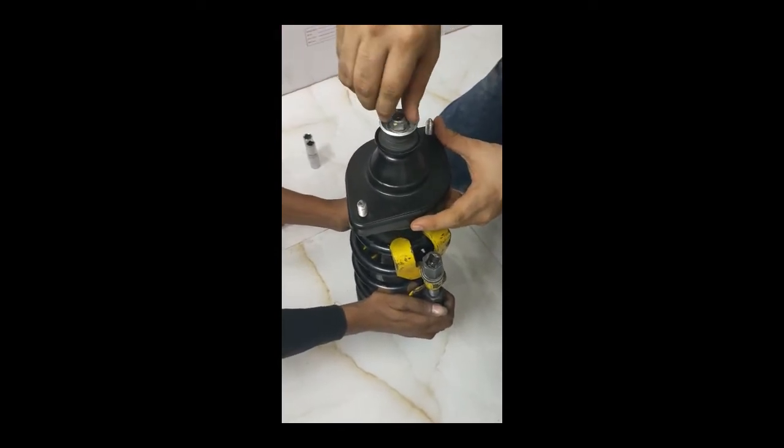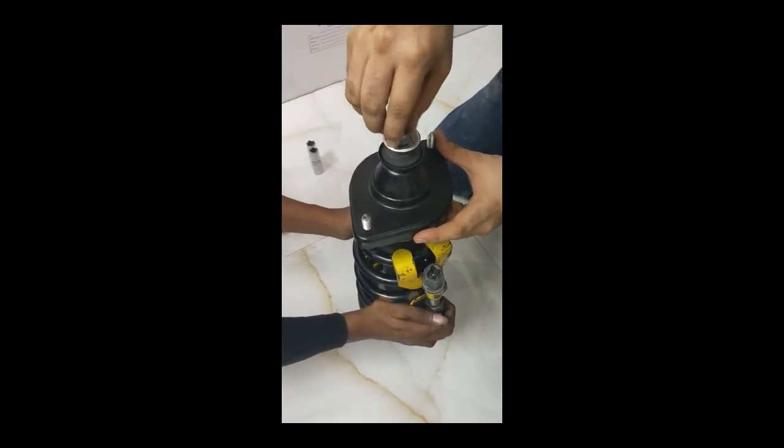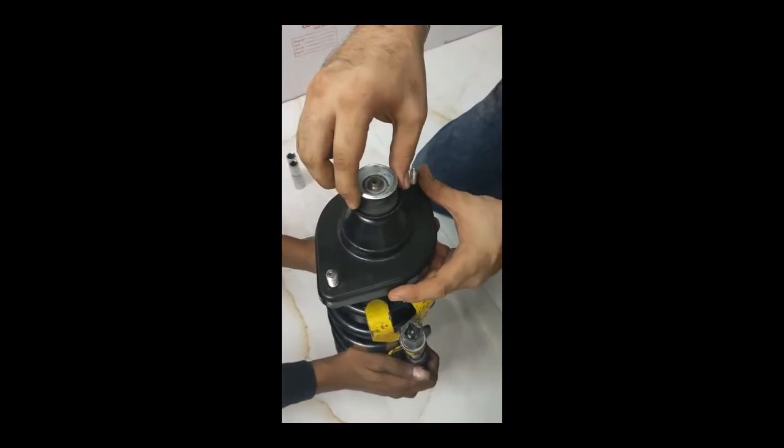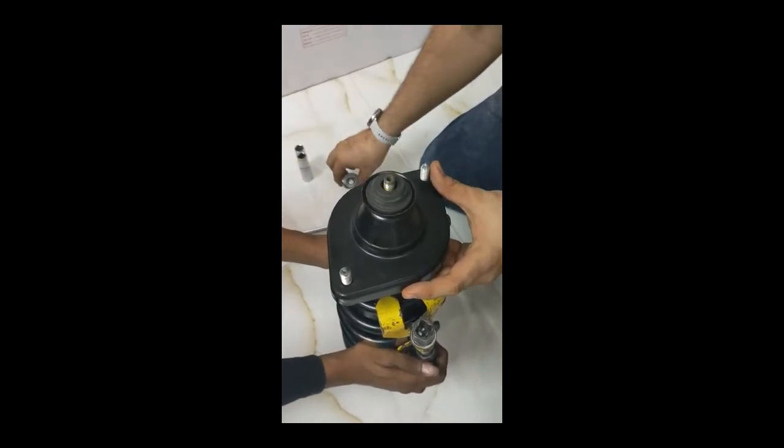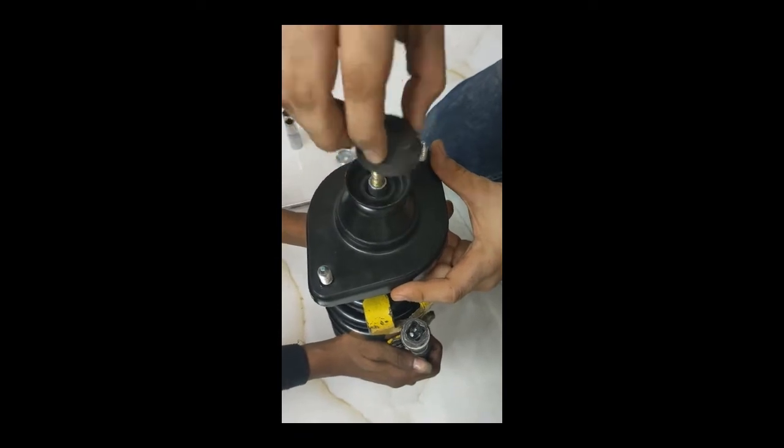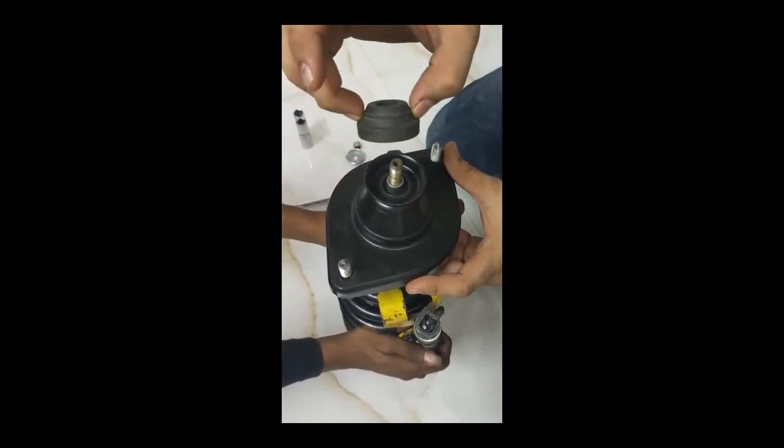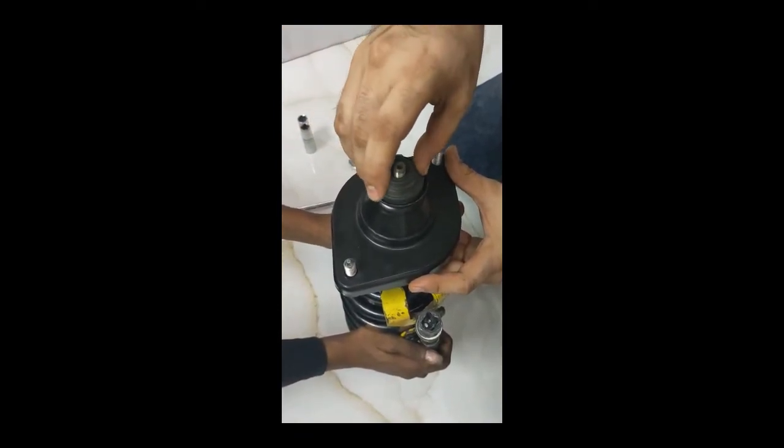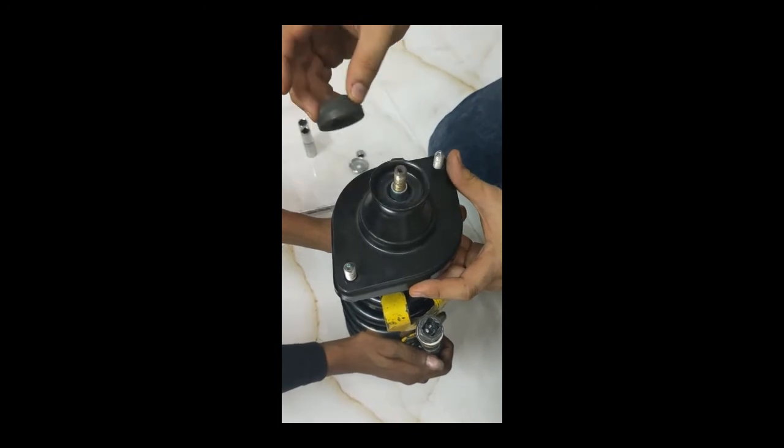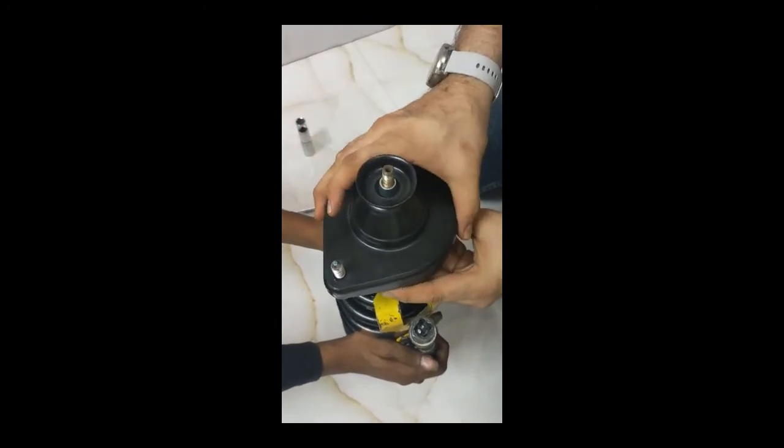After that, remove this top nut which we have already loosened. Take out this washer and this bush - it should be like this, otherwise it will create some noise. Remove this mount.